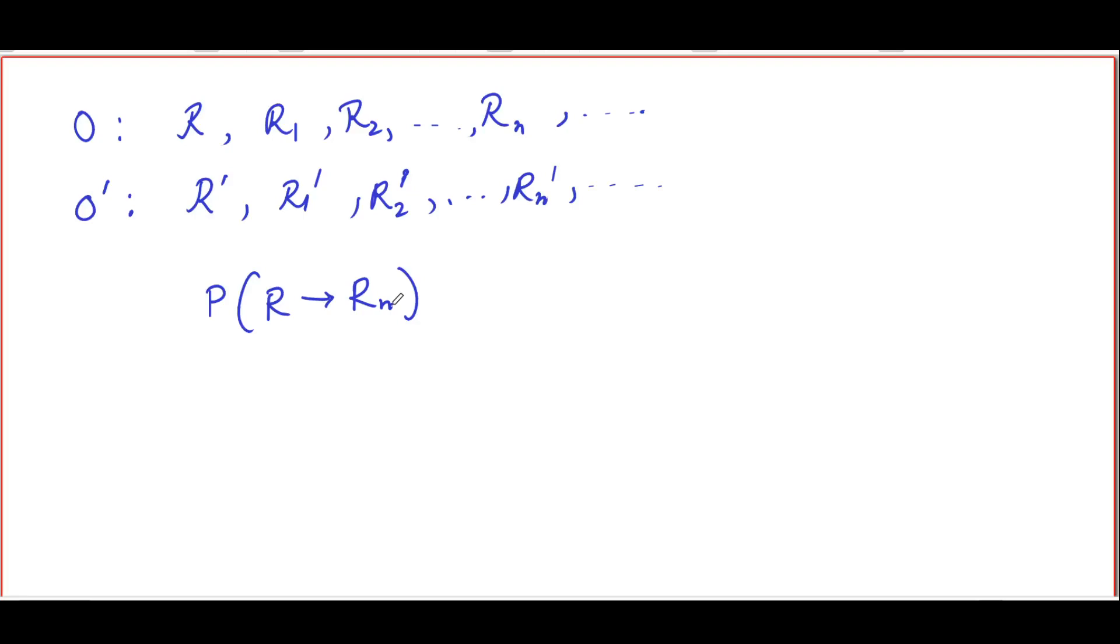Now when O tries to calculate this quantity, he or she uses R and Rn as the respective rays and calculates the probability using that. O' of course will describe the same states using rays R' and Rn' and then will calculate P of R' to Rn'.